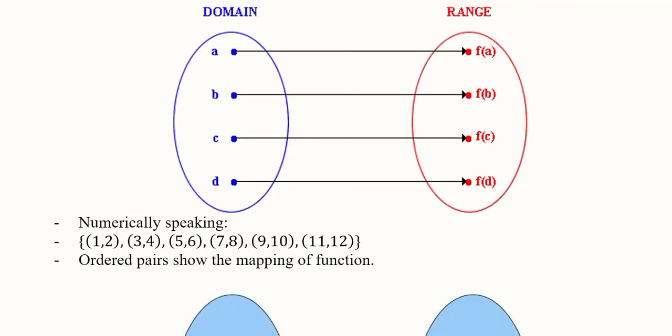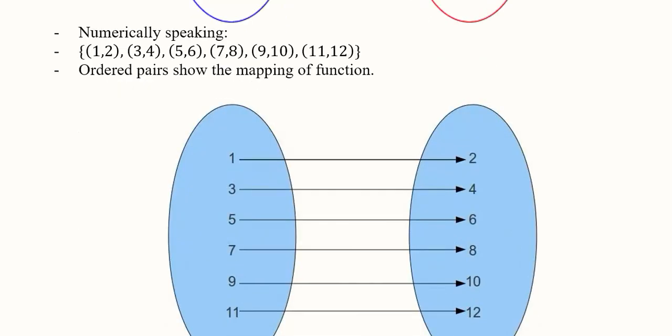Numerically speaking, you can write these values as coordinates like (1,2), (3,4). Here 1 will determine the value of dependent variable which will be 2. Let us bring the mapping diagram here: 1 is the value in the domain and 2 is the value in the range.